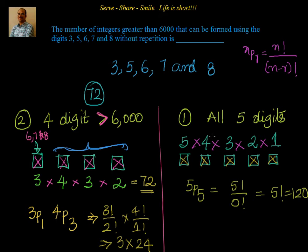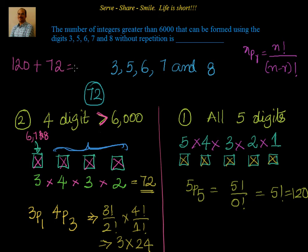The total number of integers greater than 6000 comes from these two scenarios, so we sum them: 120 (all five-digit integers using 3,5,6,7,8) plus 72 (four-digit integers greater than 6000) equals 192. So the total number of integers greater than 6000 that can be formed using the digits 3, 5, 6, 7, 8 without repetition is 192.